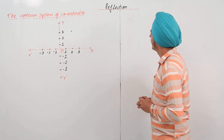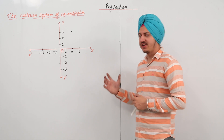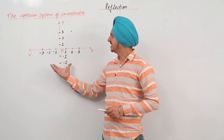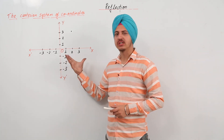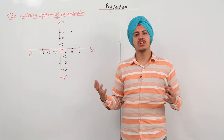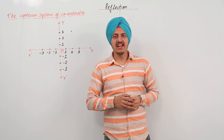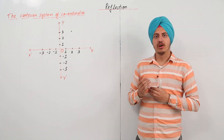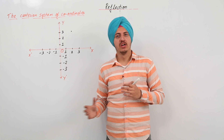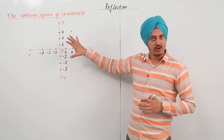The next chapter we are moving on to is reflection. In that chapter, we will be dealing with the Cartesian system of coordinates. A Cartesian system of coordinates is a way of representing any numbers on a graph.